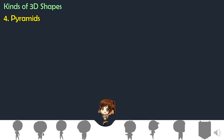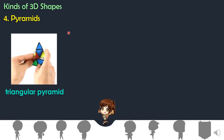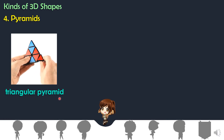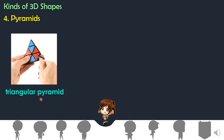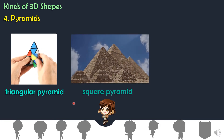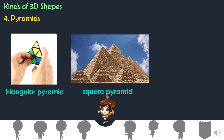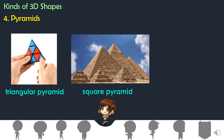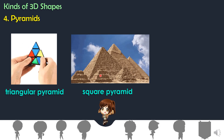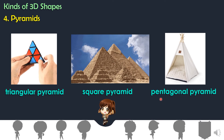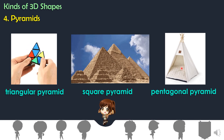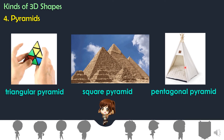Here are the different examples of pyramids. The triangular pyramid — this is a puzzle toy. The square pyramid — the well-known pyramid of Giza. Next, pentagonal pyramid — this is a tent for your pet dog or cat.